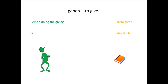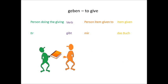So where does the indirect object come in? It's the final bit I haven't told you yet — it's who he gives the book to. In my example, to me, which in German in the dative is mir. So my whole sentence in German is er gibt mir das Buch, or in English, he gives me the book.